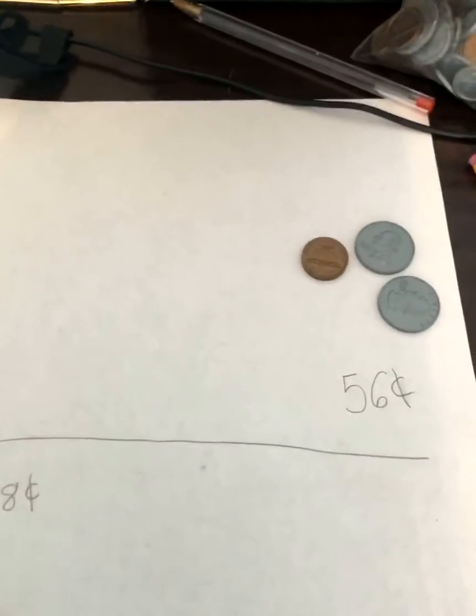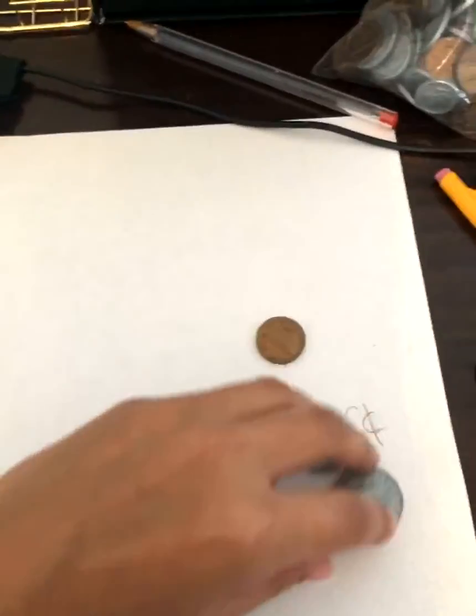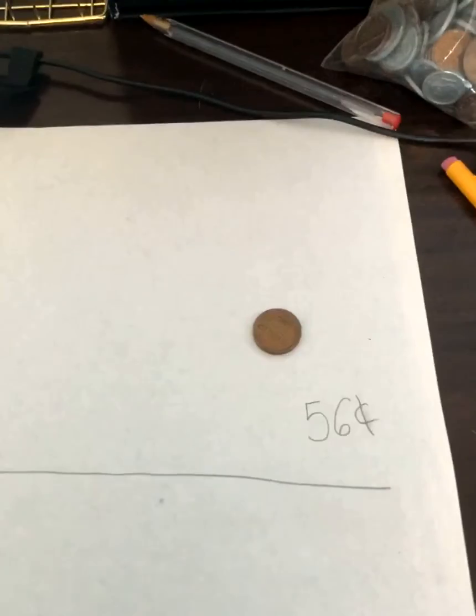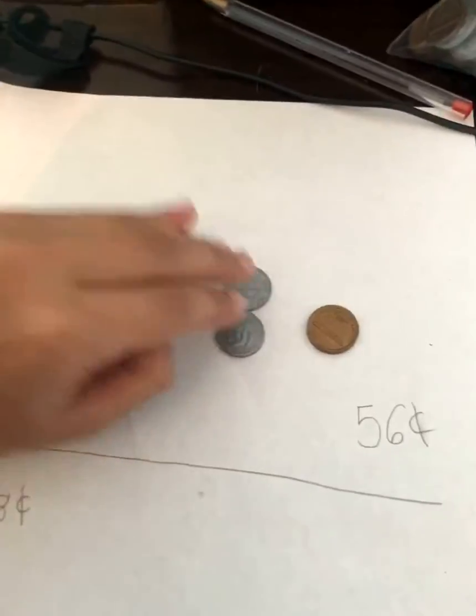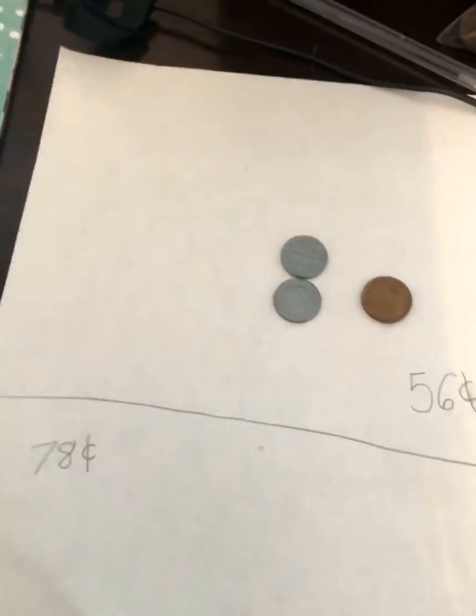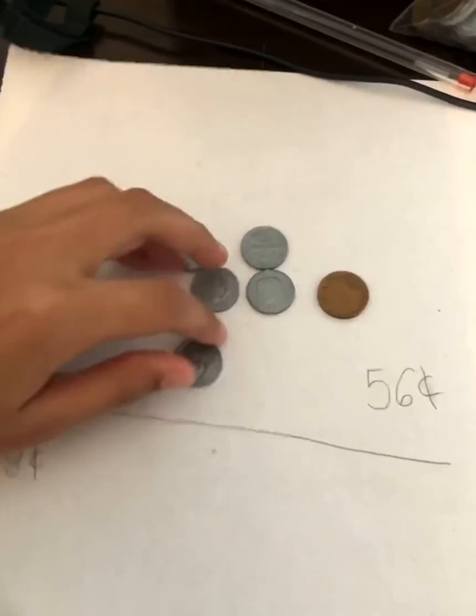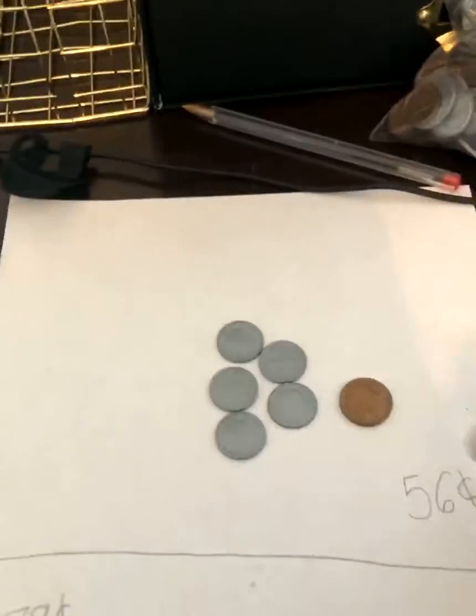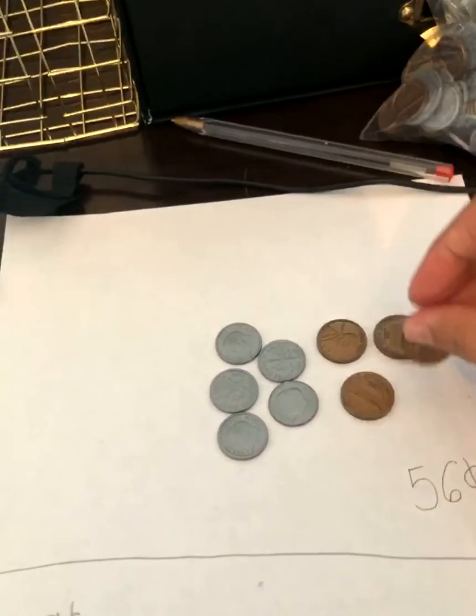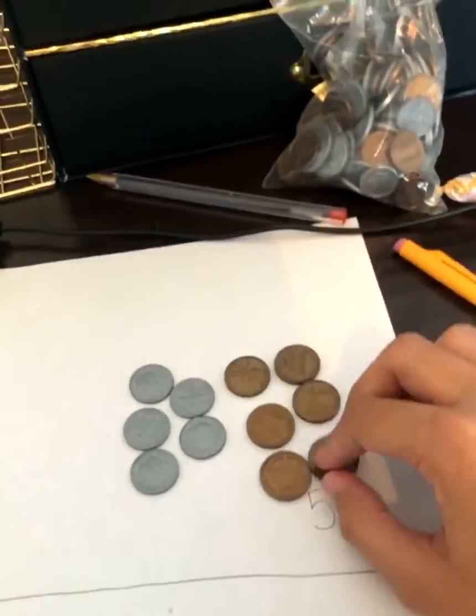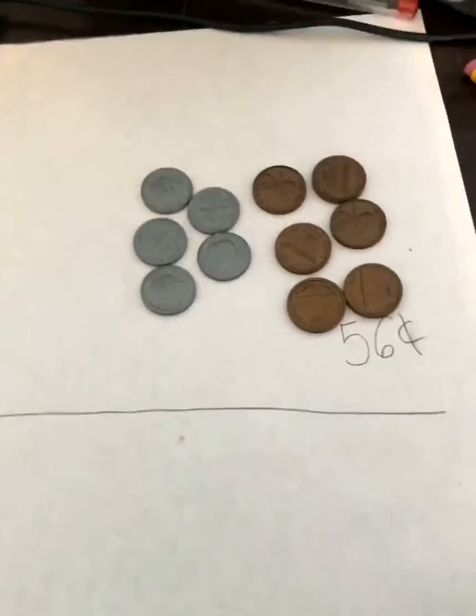Alright let's try another way. I'm going to get five dimes to make 50 cents: 50, 51, 52, 53, 54, 55, 56. So I have made 56 using only dimes and pennies.